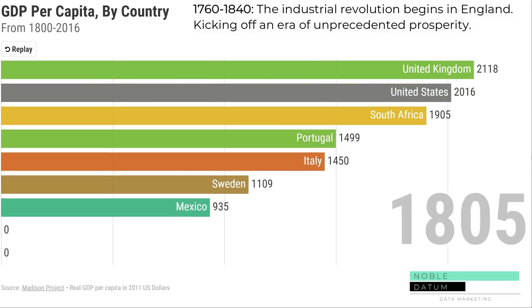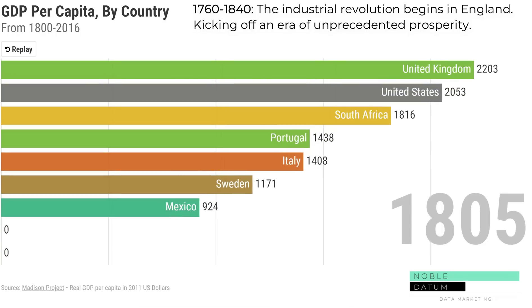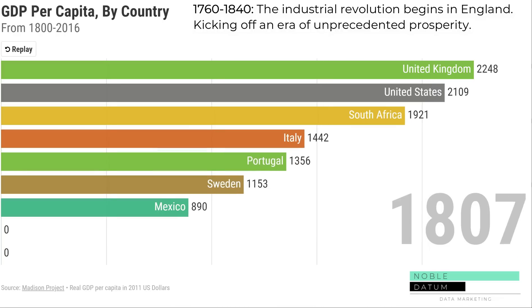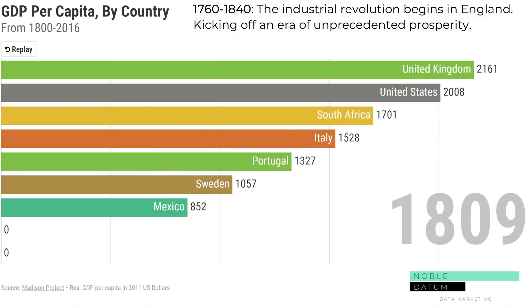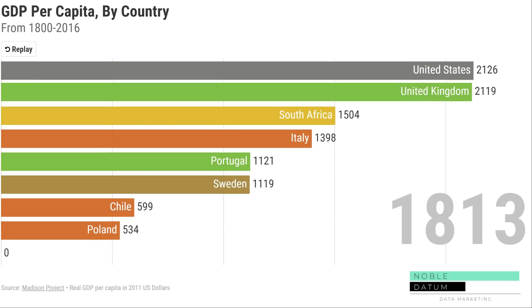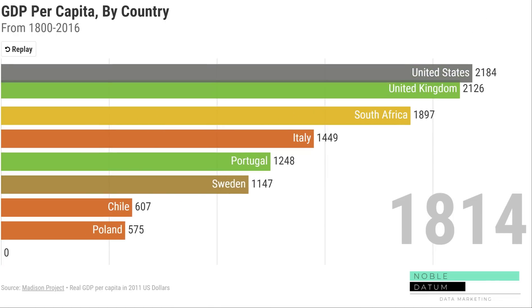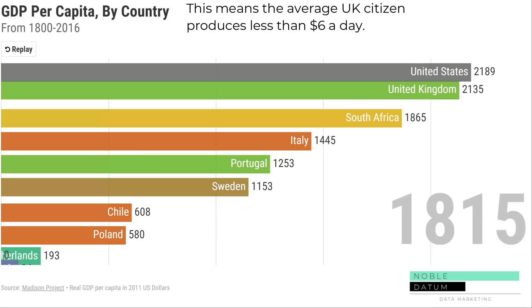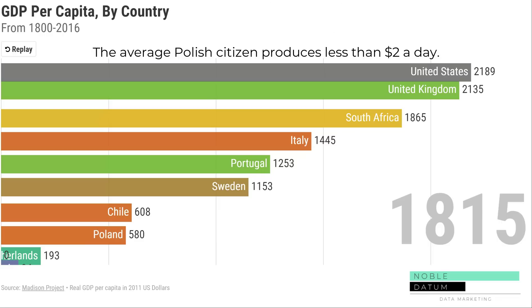We start in 1800, midway through the Industrial Revolution. A spark ignited in the United Kingdom that would gradually spread unprecedented prosperity throughout the world. At this time, the average person in the UK produced less than $6 of economic activity a day, making them three times wealthier than the average Polish resident, who produced less than $2 a day.